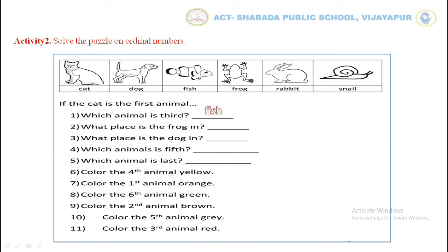The second question is: what place is the frog in? First, second, third, fourth — the frog has the fourth position. Children, pick the remaining answers by reading the sentences carefully.